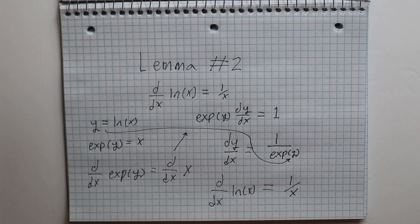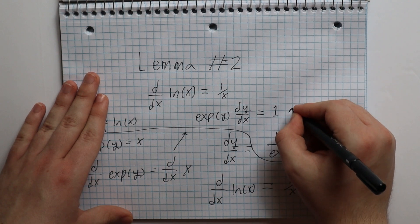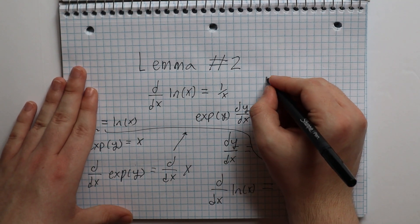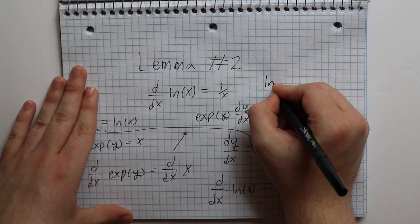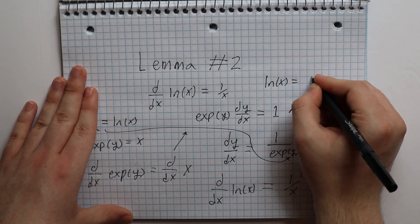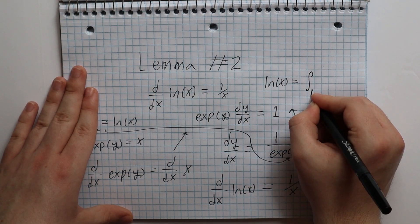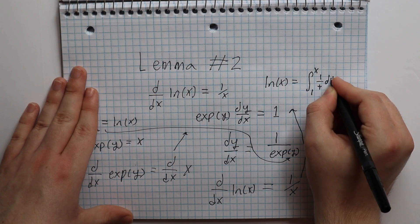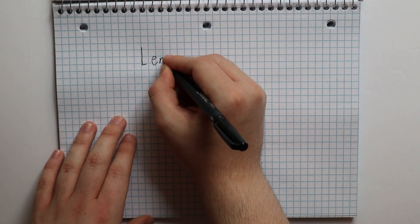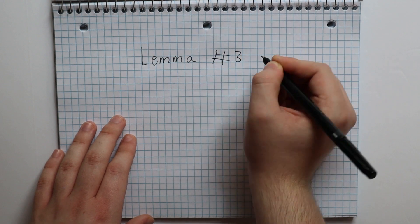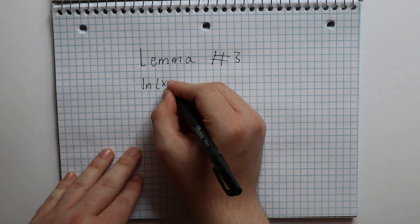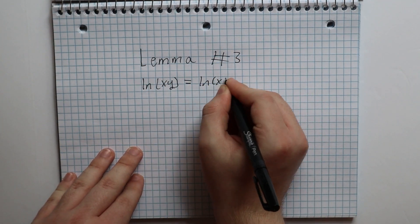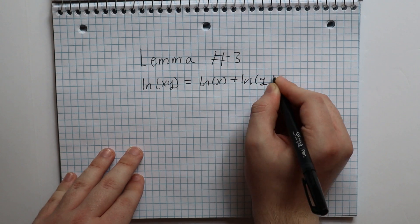Done. After all of that, I will add one simple modification: the derivative of the natural log of x equaling 1/x is the exact same statement as the integral of 1 divided by t dt from 1 to x is equal to natural log of x. You can also check why this is true yourself. And so with that last fact, we can now move on to our third lemma: to prove that the natural log of x times y is equal to the natural log of x plus the natural log of y.